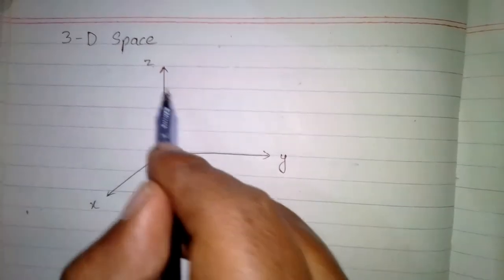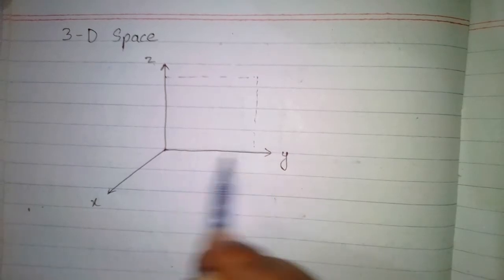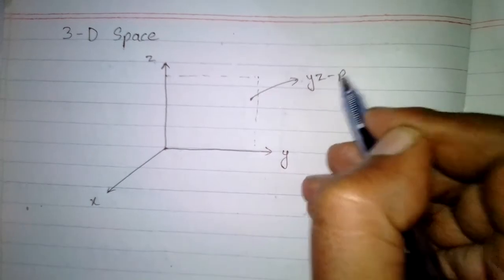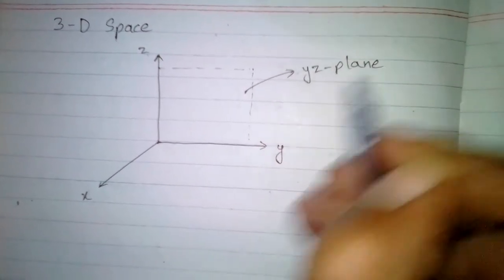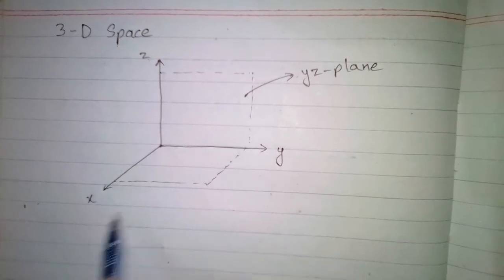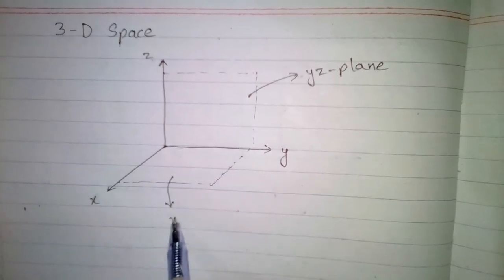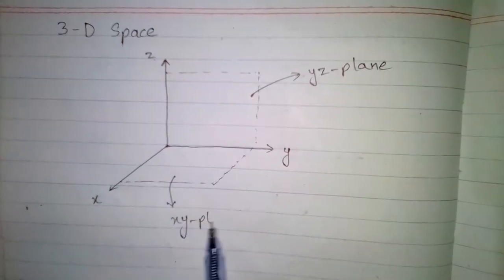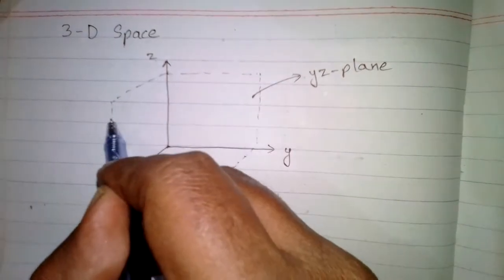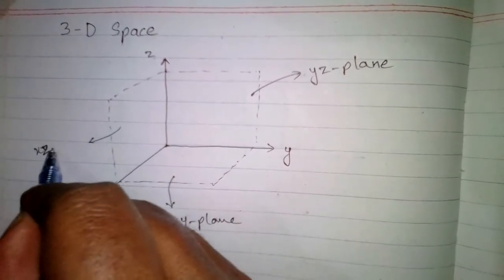The plane formed by the Y and Z axis is called the YZ plane. The plane formed by X and Y axis is called the XY plane. And the plane formed by X and Z is called the XZ plane.